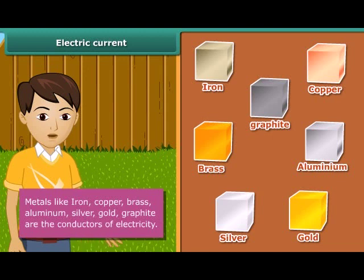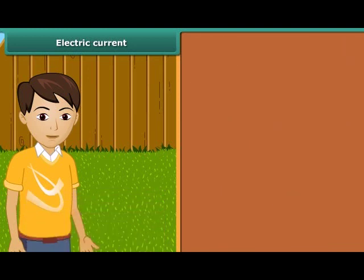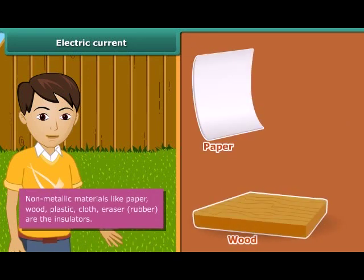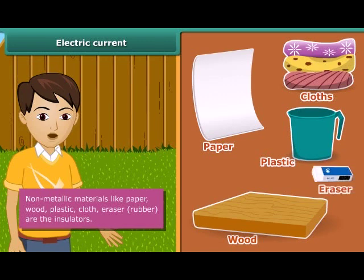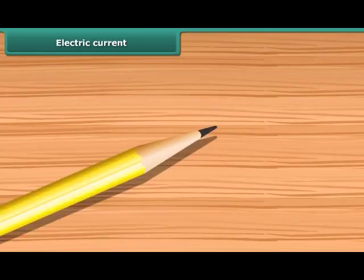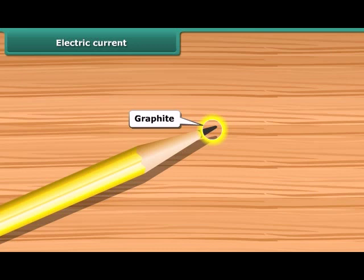The materials through which electric current doesn't flow are called insulators. Insulators are also known as non-conductors of electricity. Paper, wood, plastic, cloth, eraser, and rubber are the insulators. Pencil lead is made of graphite, it is a form of carbon. It is non-metal but it is a conductor of electricity.